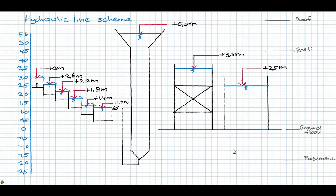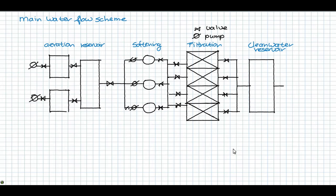Note that in the hydraulic line scheme, the heights are indicated. Now that we know the sizes of the processes and the number of units, we can draw the main water flow scheme. This diagram indicates the number of units, the pipes, the pumps, and the valves.